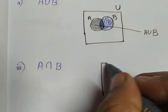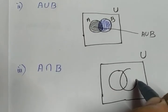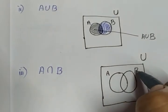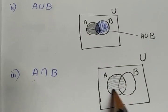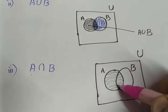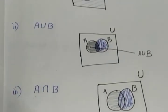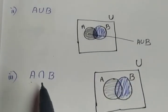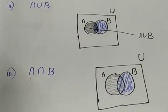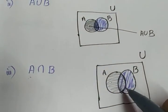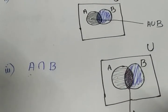The third question is A intersection B. Draw the rectangle for the universal set U, and since there are two sets, mark one as A and the second as B. Shade set A with a pencil and shade set B with a pen. Intersection means common — unlike union where we take the full portion, intersection is the portion that contains both the pencil shade and the pen shade. That common overlapping region is A intersection B, represented by the blue colored shaded region.